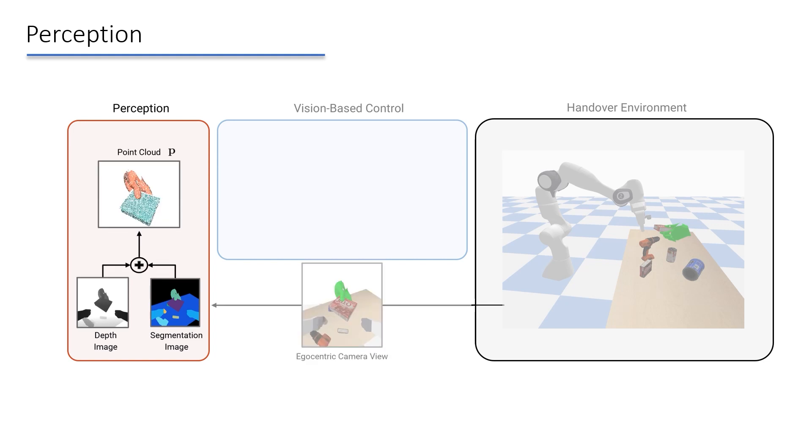The segmented point cloud is then sent to the vision-based control module. In the control module, the point cloud is passed through PointNet++, which computes a lower-dimensional feature embedding. A control policy receives the feature and predicts actions, which are used to control the robot.